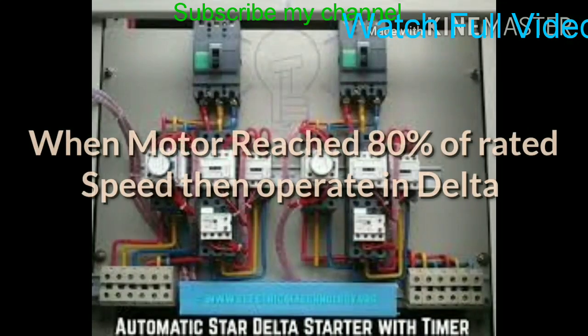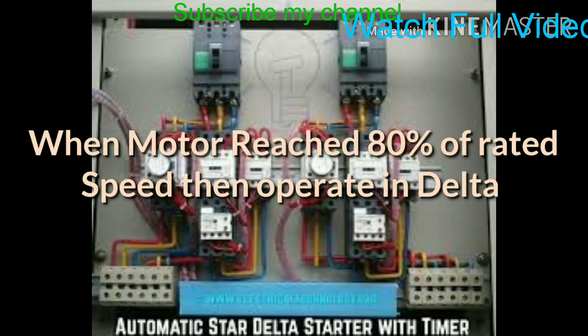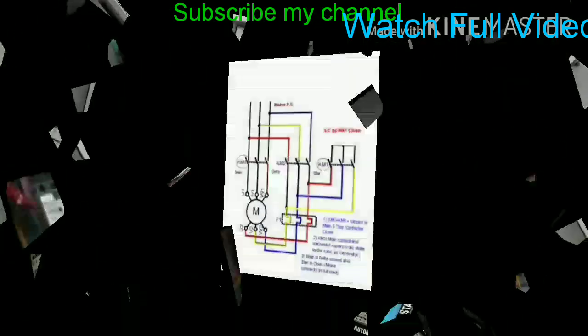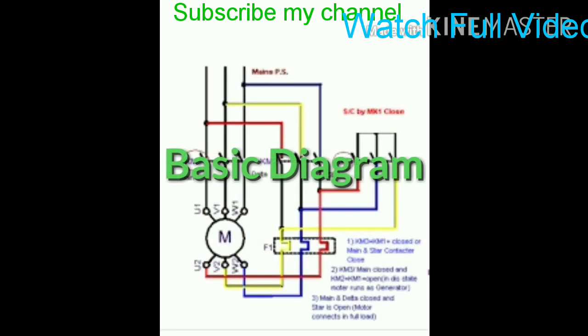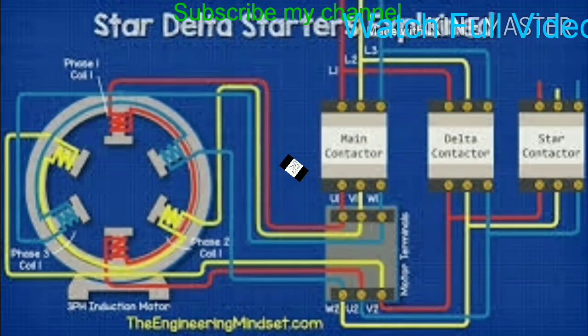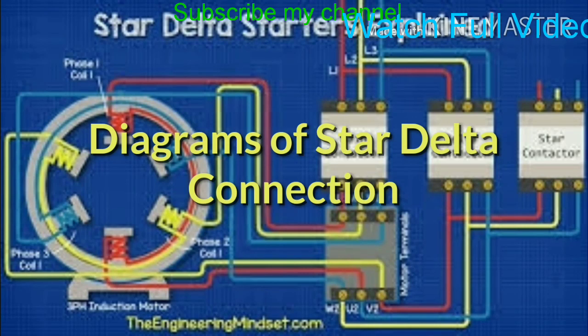So why do we connect in star first? Because for the star connection, the line current and phase current are the same. And at starting time, the motor has no back EMF. So we use low current for the purpose of starting.